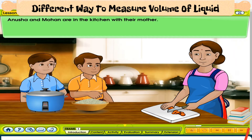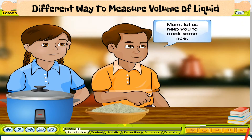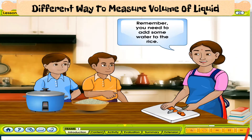Anusha and Mohan are in the kitchen with their mother. They say, 'Mom, let us help you to cook some rice.' Their mother replies, 'Oh, very kind of you. Remember, you need to add some water to the rice.'